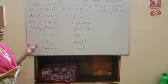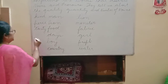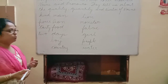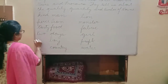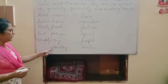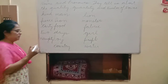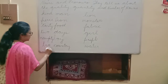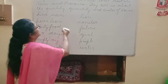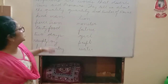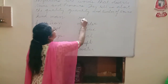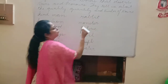The next one is 'days': two days, three days, four days — it can be anything. I am writing here 'two days'. The next one is 'boy' — we can write 'naughty boy'. Now we have 'country': big country, vast country, large country. We also have 'rabbit' — we can have 'weak rabbit'.